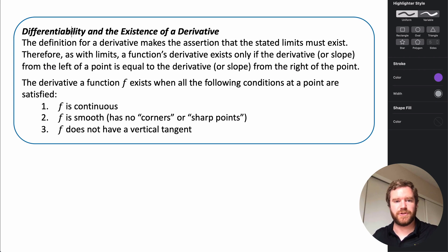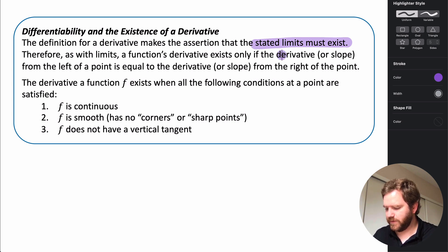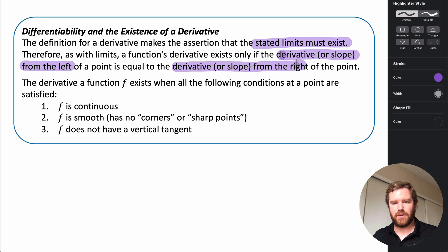In this video, we're going to be talking about differentiability and the existence of a derivative. In order for a derivative to exist, the definition asserts that the stated limits in the definition must exist. As with all limits, a limit will only exist if the derivative or slope from the left of our point is equal to the derivative or slope from the right of our point. So the slopes from either side, as they approach that value of a, as x approaches a, have to be equal in order for our derivative to exist and for our function to be differentiable at that point.